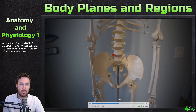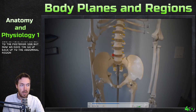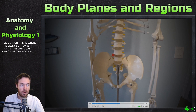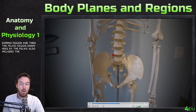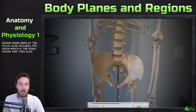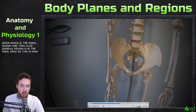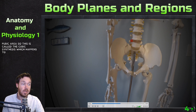Going back up to the abdominal region — where the belly button is — that's the umbilical region of the abdominal region. The pelvic region down here by the pelvis also includes the groin, which is the inguinal region. The genital region is the pubic area. This is called the pubic symphysis, which happens to be in the pubic region.